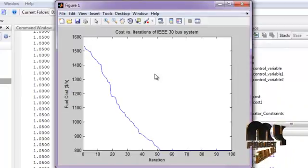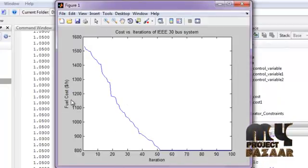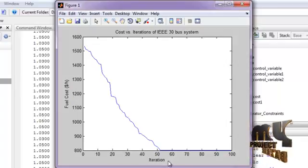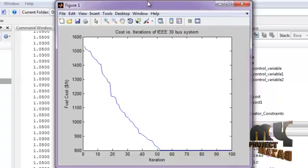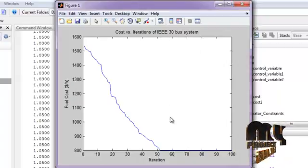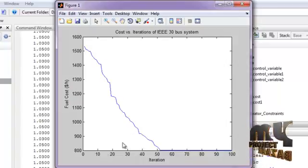Here, we obtained the cost curve showing fuel cost versus various iterations. There are 100 iterations taken for this implementation on our IEEE 30 bus system. The fuel cost decreases as iteration increases.